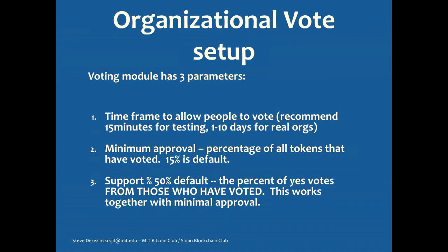If you have four people each with 100 tokens — 400 tokens total — then 15% would basically be one person's vote carrying the decision. So you have to think about those calculations. The third parameter is the support percentage: of the people that voted, what percentage said yes or no? The documentation and the actual page aren't that clear on this. For now, you can select the basics just to get something up and running — 15 minutes is good for testing because you can go through iterations. Select the company organization template.